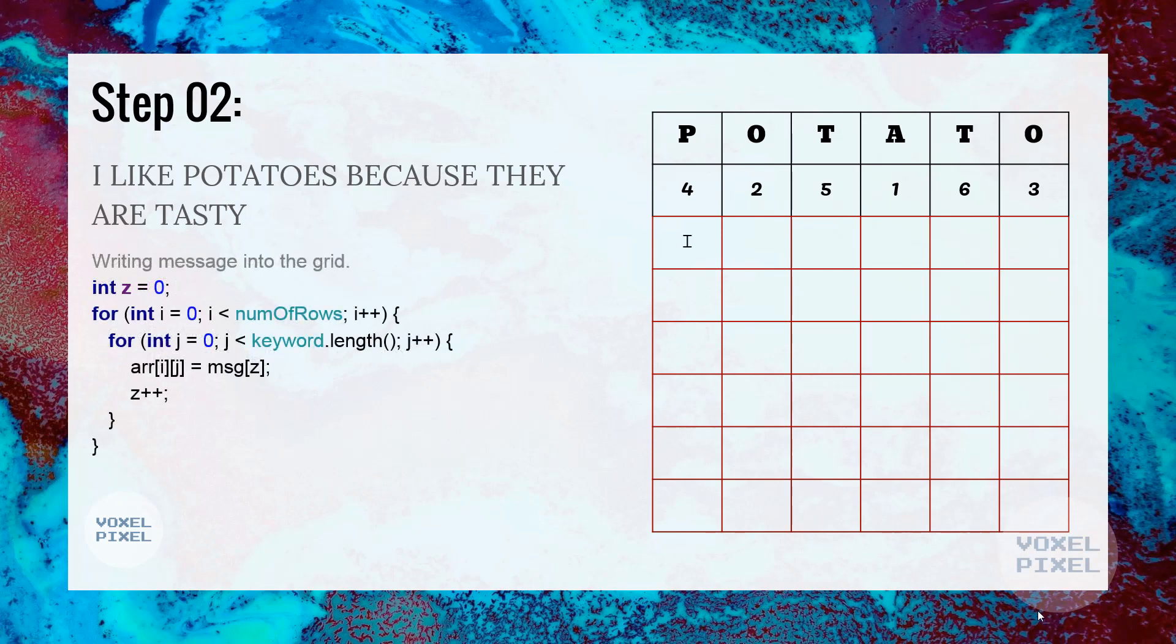Next, we will write our plain text into the grid letter by letter. Since first letter is I, we will put it first, then followed by L, then I, then K and then E. We will keep on adding our entire plain text message into the grid letter by letter until entire grid is filled.